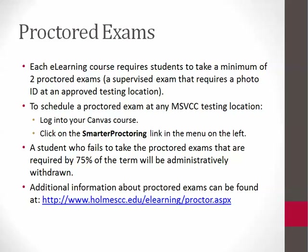All Holmes eLearning courses require at least two proctored exams. This is an exam that you have to make an appointment for and go to one of the approved proctoring centers with a picture ID. Holmes Community College and the Mississippi Virtual Community College provide proctoring services through a service called Smarter Proctoring. Each Holmes eLearning course has a link in the main navigation called Smarter Proctoring to schedule your proctor test. Click on the Smarter Proctoring link within your Canvas course and follow the instructions on the Smarter Proctoring Student Guide. Any student who fails to take a required proctor test by the 75% mark in the semester will be administratively withdrawn from the course.